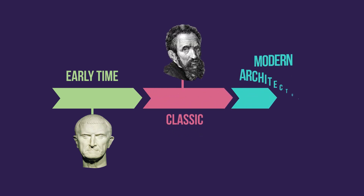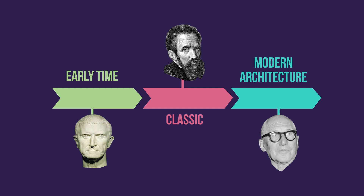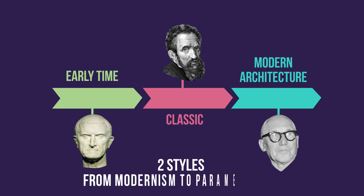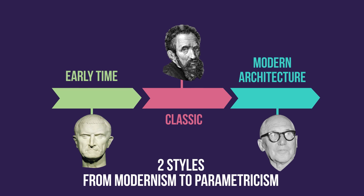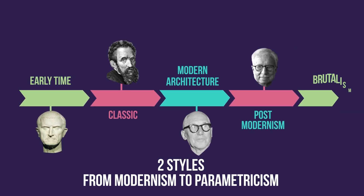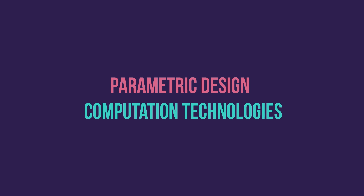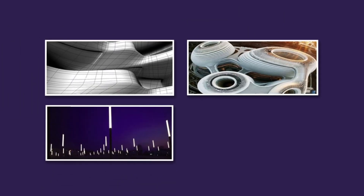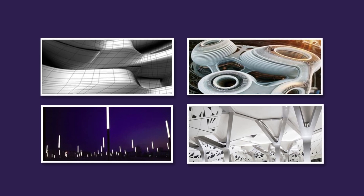The work of Le Corbusier and others during the era of the industrial age laid out the path to modern architecture. It dominated the discipline for around 70 years, replaced the classical mentality, and underwent many transformations. Then came two important transitional styles that carried us from modernism into parametricism: postmodernism and brutalism. Parametric design is the architect's use of computational and communication technologies, and it is now almost 25 years old, having also undergone some variations.